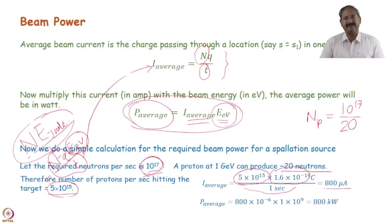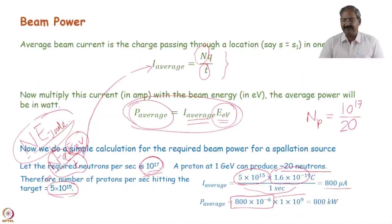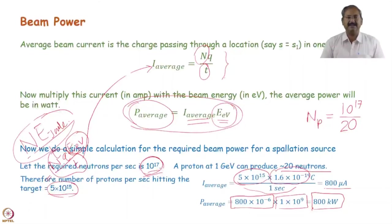What is the beam power? The current is 800 µA, which is 800 × 10^-6 amperes. The energy is 1 GeV, which is 1 × 10^9 eV. Multiplying these gives 800 kW. So 800 kW of beam power is required to eject 10^17 neutrons per second.